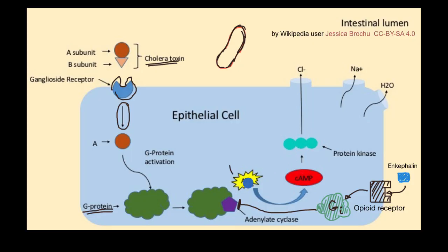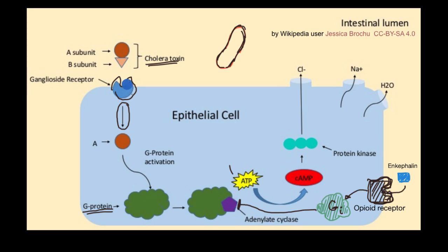If there were a mutation in the opioid receptor so it wasn't as good at binding enkephalin, then enkephalin would not be as effective at stopping this signal transduction pathway. The enkephalin wouldn't be able to bind to the opioid receptor, the inhibition would not occur, and you'd just have the regular transduction pathway from the cholera toxin proceeding — which results in diarrhea.